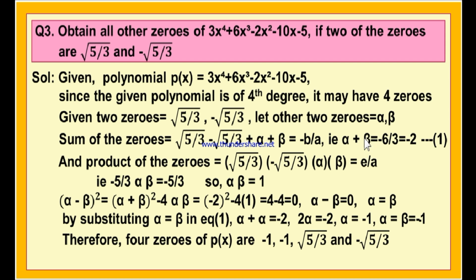Now let us substitute alpha equals beta in the first equation. Alpha plus alpha equals -2, so 2 alpha equals -2, and alpha equals -1. If alpha is equal to -1, then beta is also equal to -1. Therefore, the four zeros of the given polynomial are: alpha = -1, beta = -1, and the other two known roots √(5/3) and -√(5/3). These are the four roots of the given fourth degree polynomial.